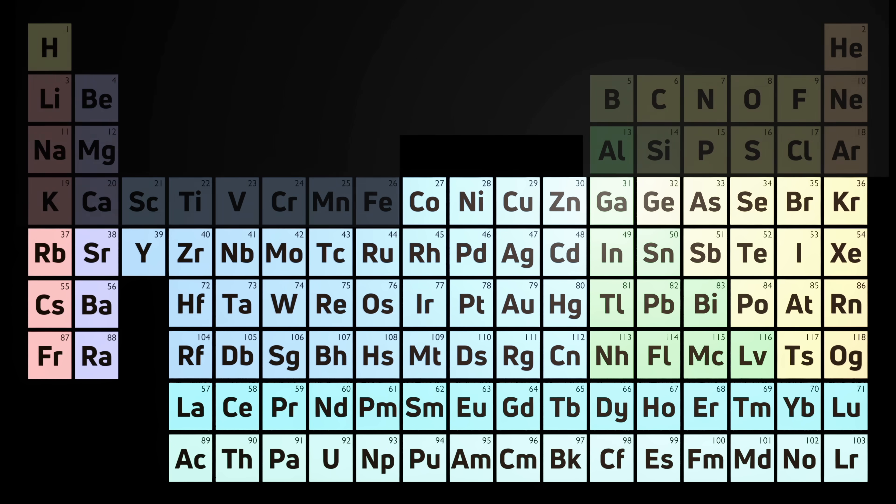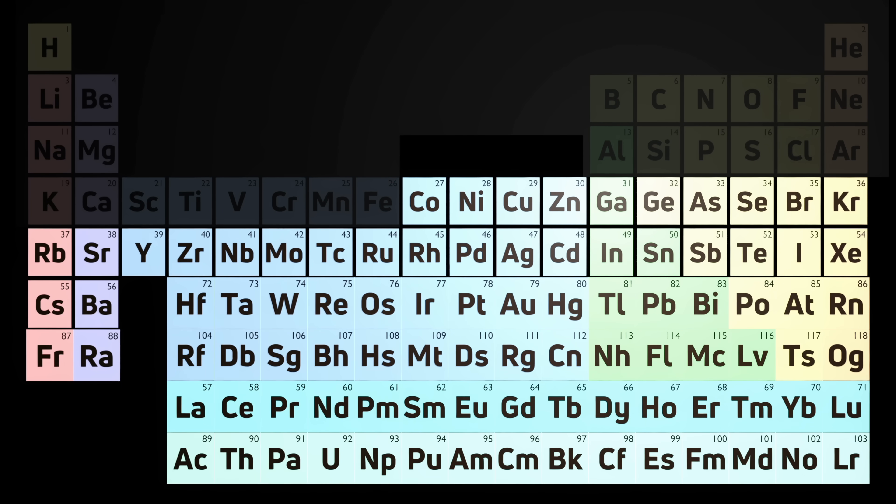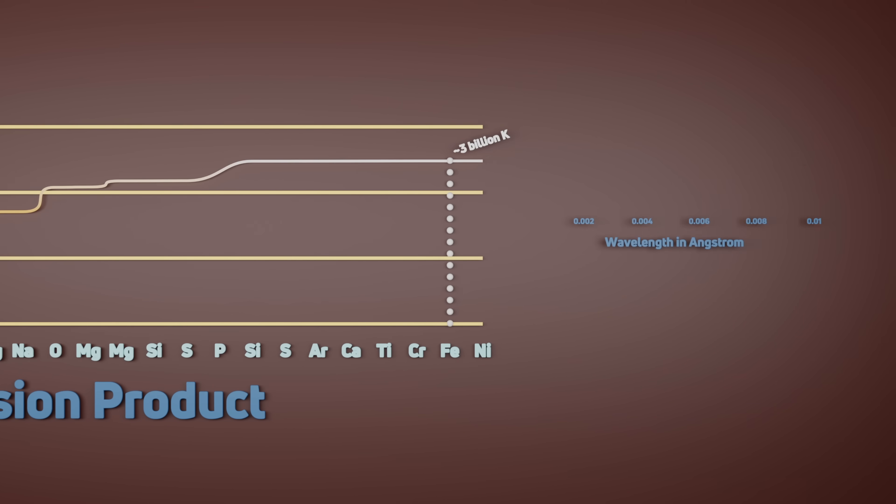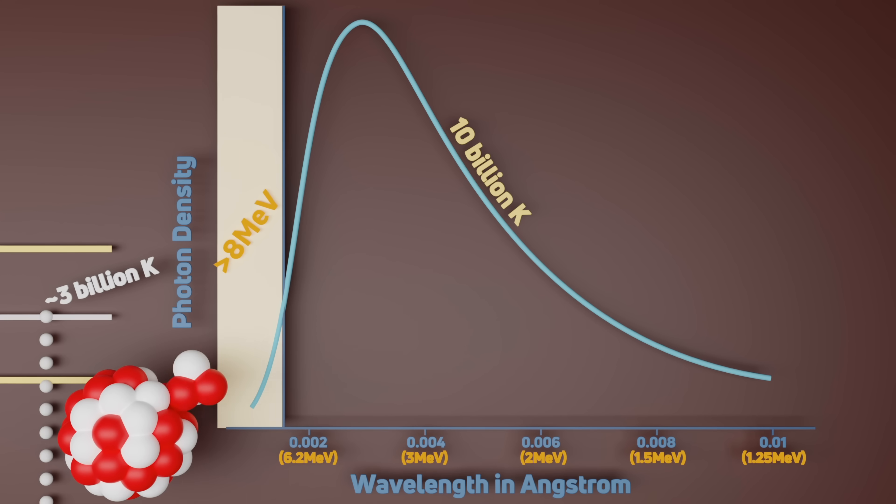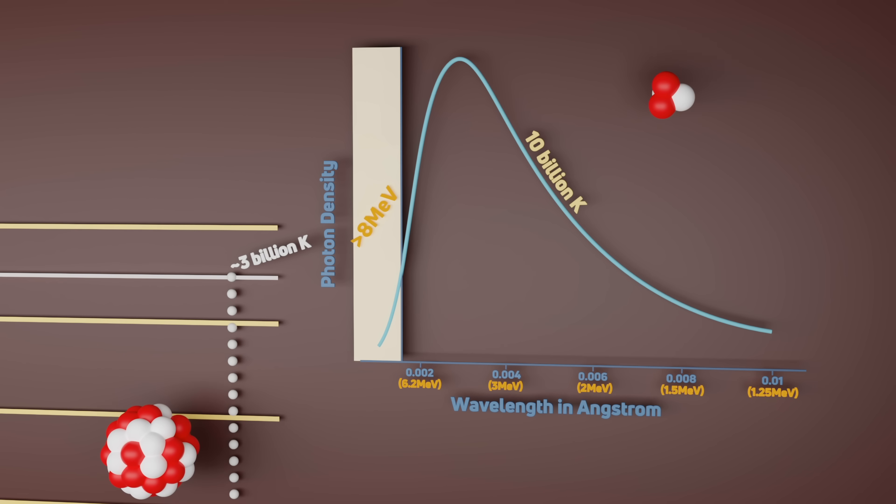But elements heavier than iron, especially the more massive ones, aren't formed from fusion. In fact, temperatures hotter than those needed to fuse iron produce photons with enough energy to fragment and split these atoms into smaller ones. So hotter and denser environments are actually counterproductive to the creation of heavier elements.